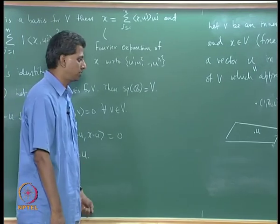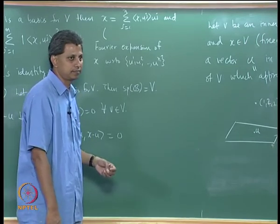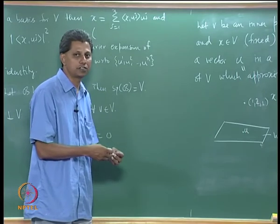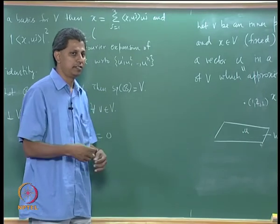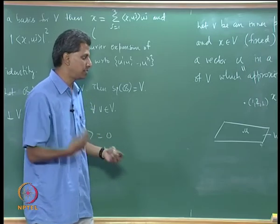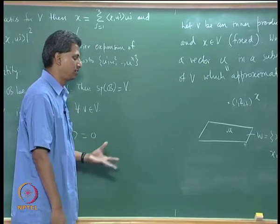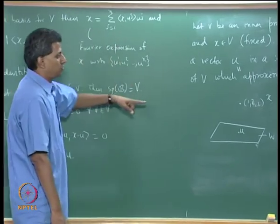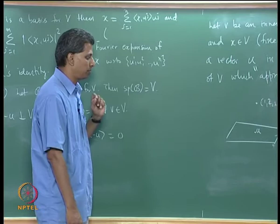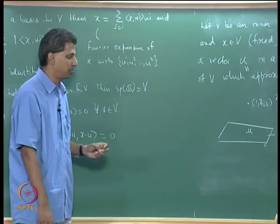Another example: in the space of continuous functions C[0,1], we may want to approximate the exponential function as a linear combination of certain polynomials. The subspace spanned by those polynomials is W, and we seek the best approximation to the exponential in that subspace. In the finite dimensional case this problem can be solved; in the infinite dimensional case there are examples where no solution exists.